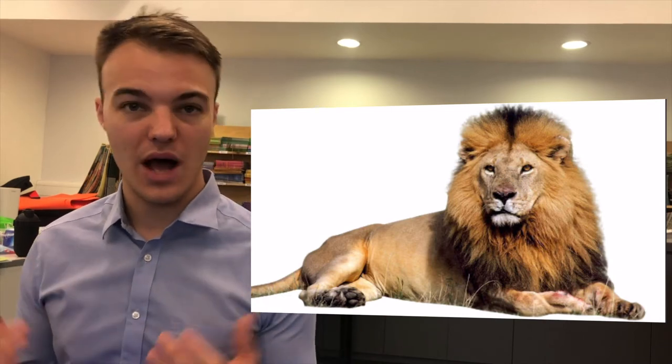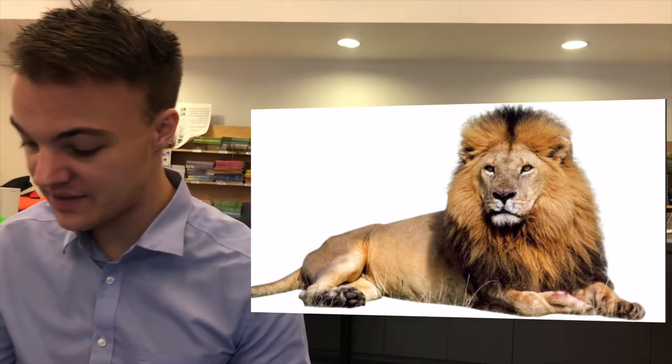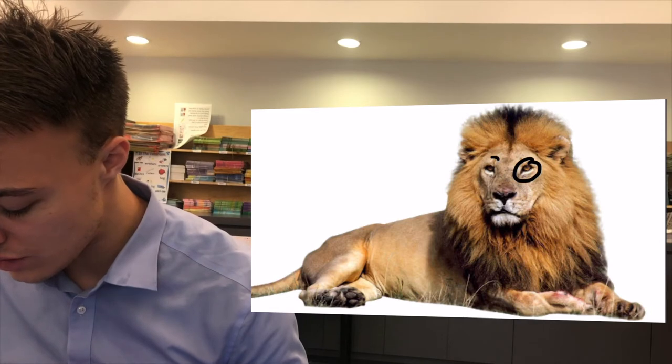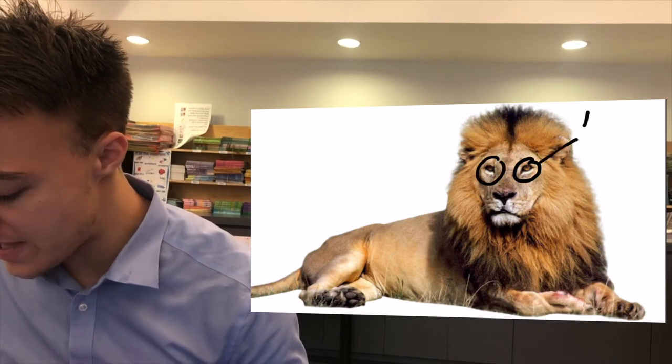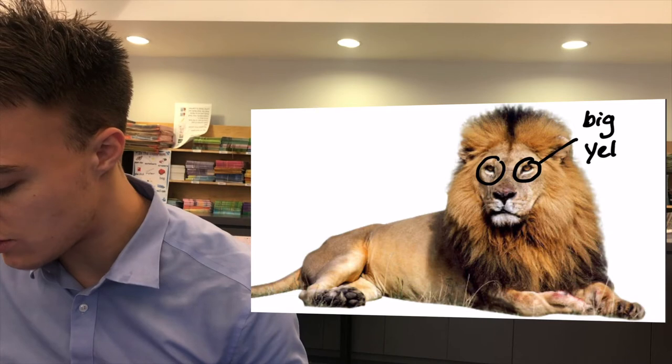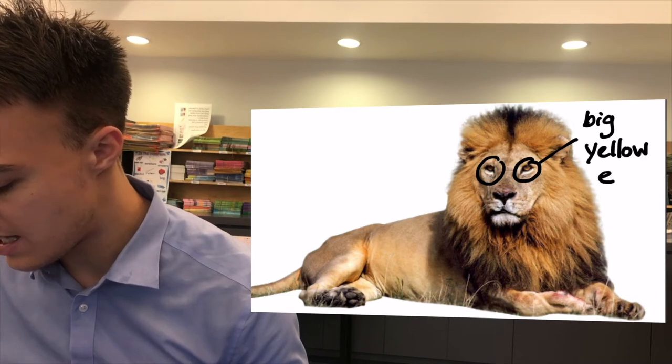What can we see this lion has? Well, I can see that the lion has two big yellow eyes. It has two big yellow eyes.